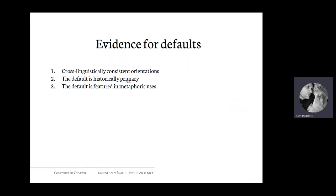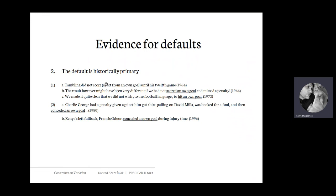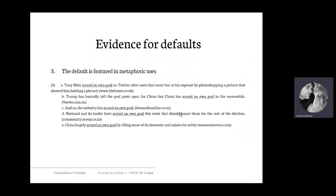Number two: the default is also historically primary. When it comes to 'own goal,' where I claim 'score an own goal' is the default and dominant usage, if you look at the earliest attestations in Google Books, these are found in the 1960s and 1970s — 1964, 1966, 1972 — whereas 'conceding an own goal' does not appear until almost two decades later. This also suggests that one option is the default because it appears first historically.